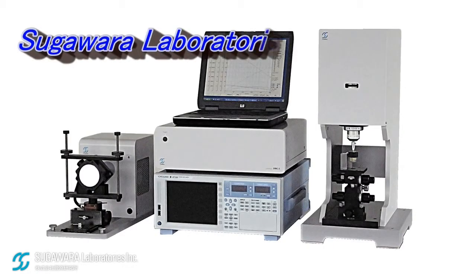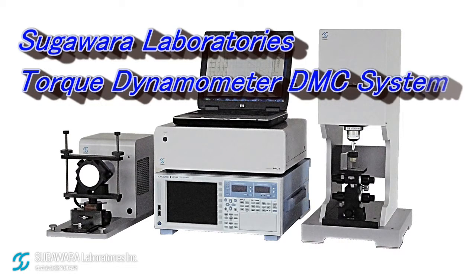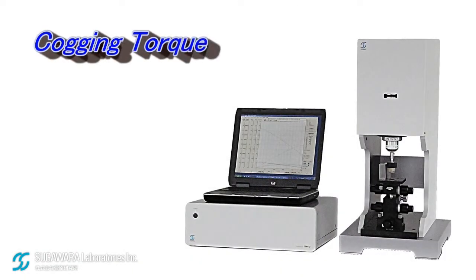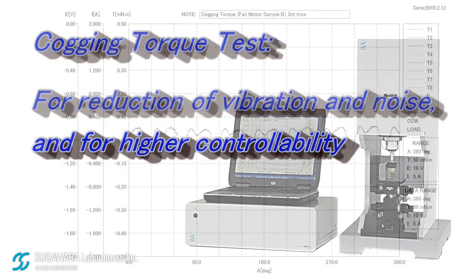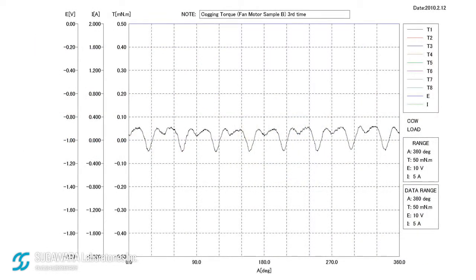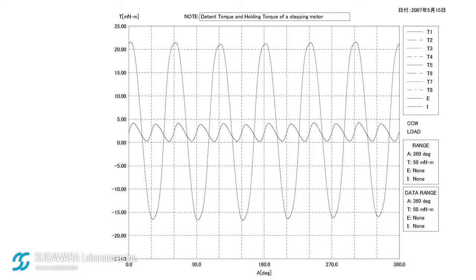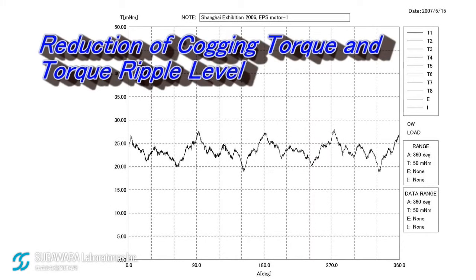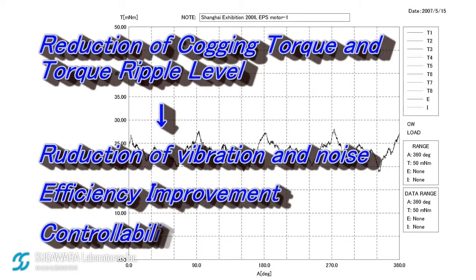Sugawara's Torque Dynamometer DMC system strongly supports research and development of small size precision motors. Cogging torque is the torque that oscillates according to the rotation angle in non-excited permanent magnet motors. Reducing cogging torque level allows reduction of vibration and noise and higher efficiency and controllability.